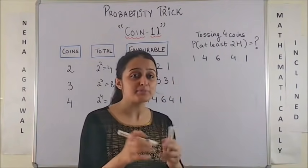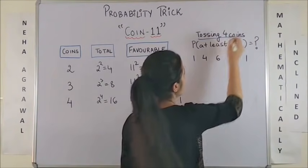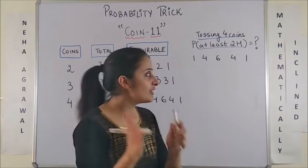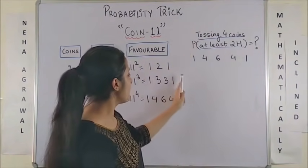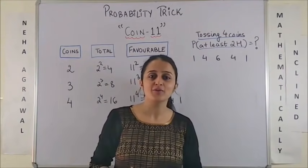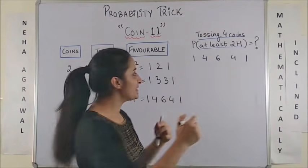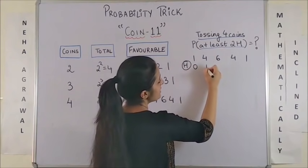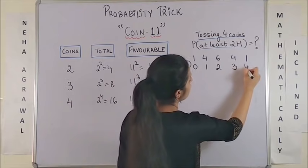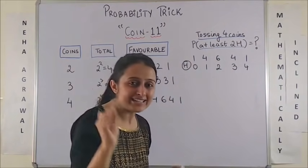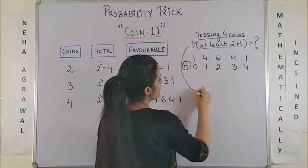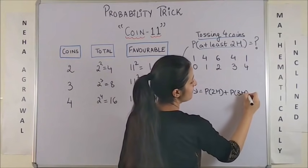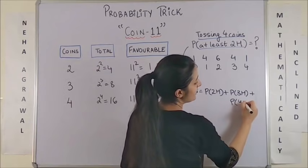Same way, suppose the experiment is of tossing 4 coins. And let's say you have to get probability of at least 2 heads. So, first thing you are going to do is 11 raised to power 4 which will be 1, 4, 6, 4, 1. From left to right, you have the favourable outcomes for heads. So, starting from 0, 1, 2, 3, 4. Now, when the question says at least 2 heads, so you know this probability is going to be 2 heads plus 3 heads plus 4 heads.